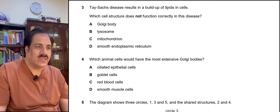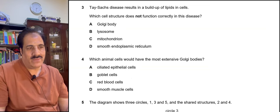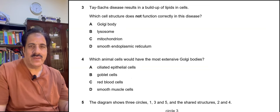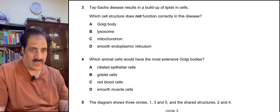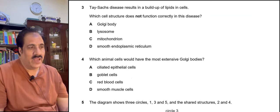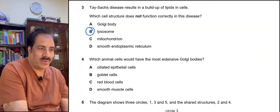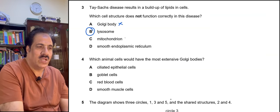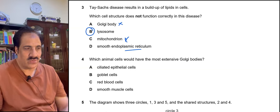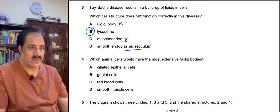Question 3: Tay-Sachs disease results in a buildup of lipids in cells. The cell structure not functioning correctly must be the one responsible for breaking down lipids — that is the lysosome. The Golgi body packages proteins, mitochondria is concerned with energy, and smooth endoplasmic reticulum is involved in lipid production. So lysosome is the correct answer.